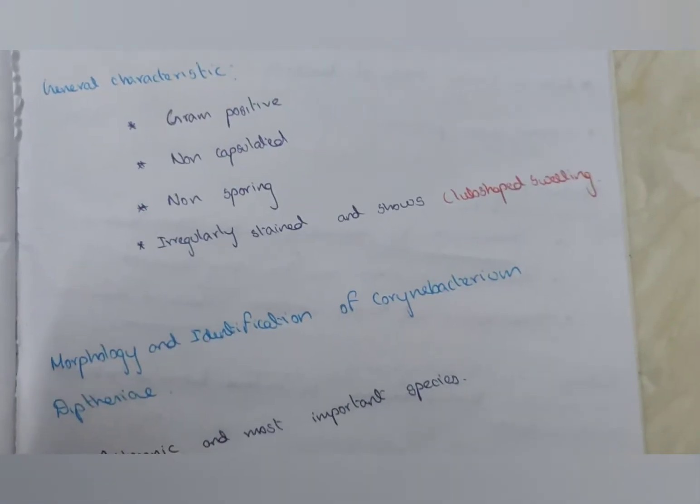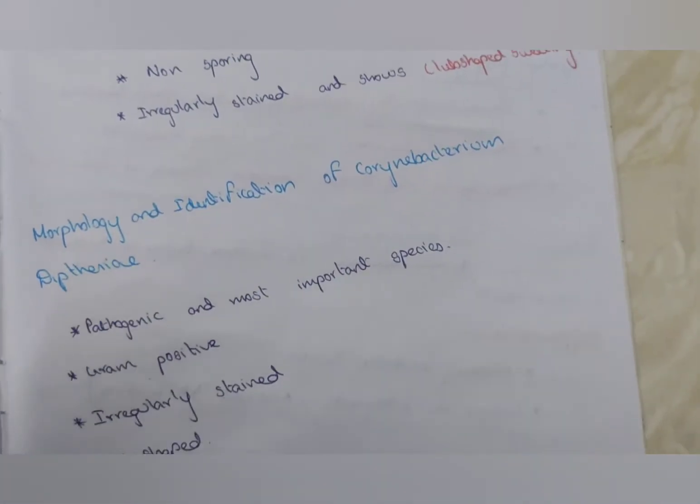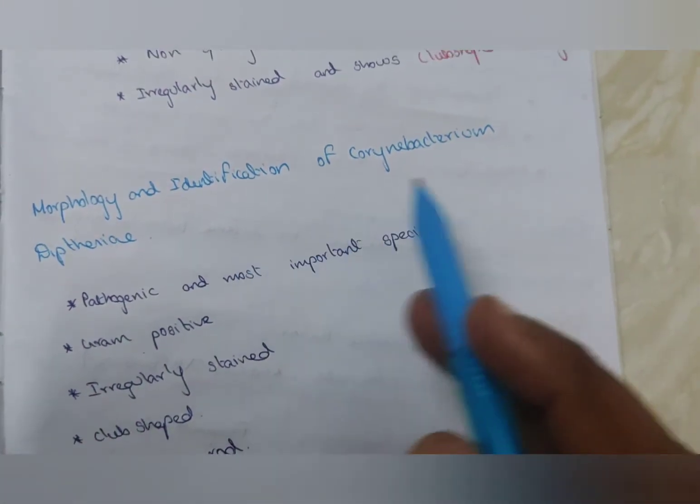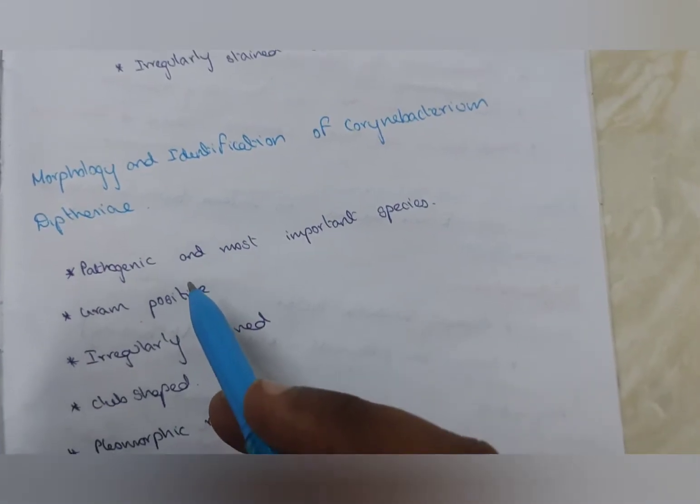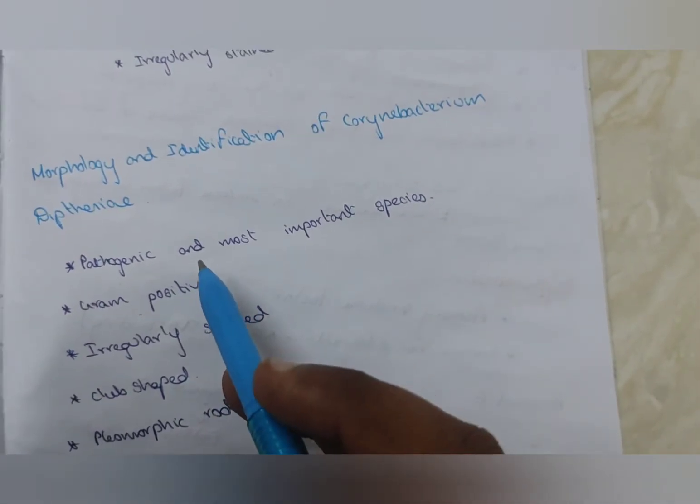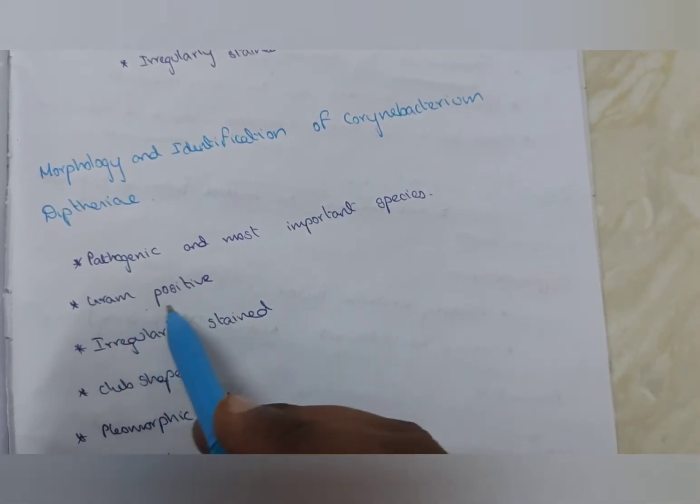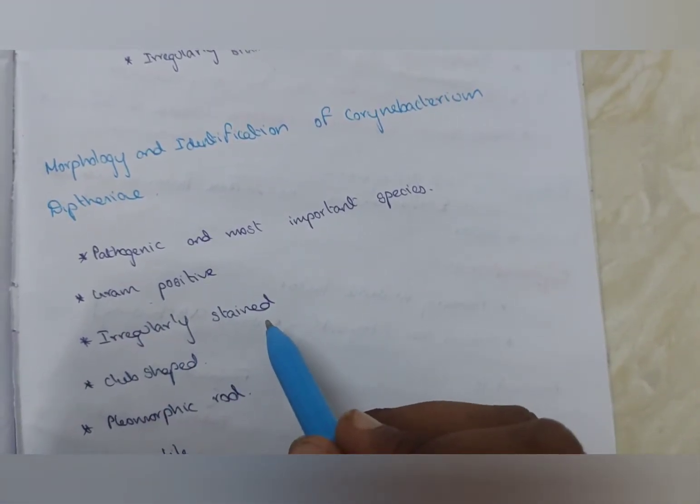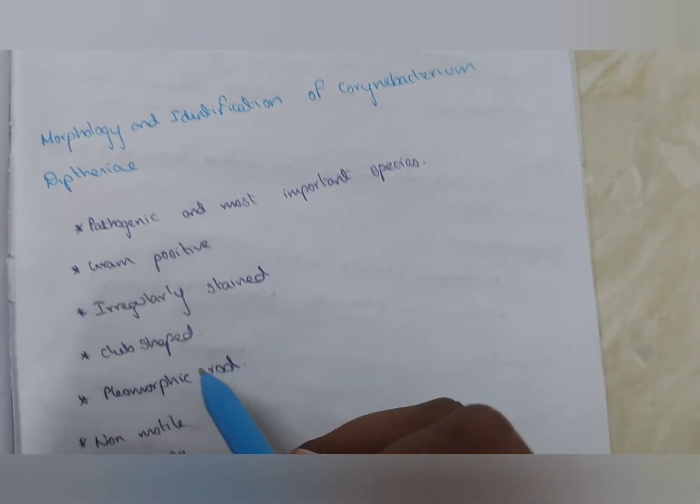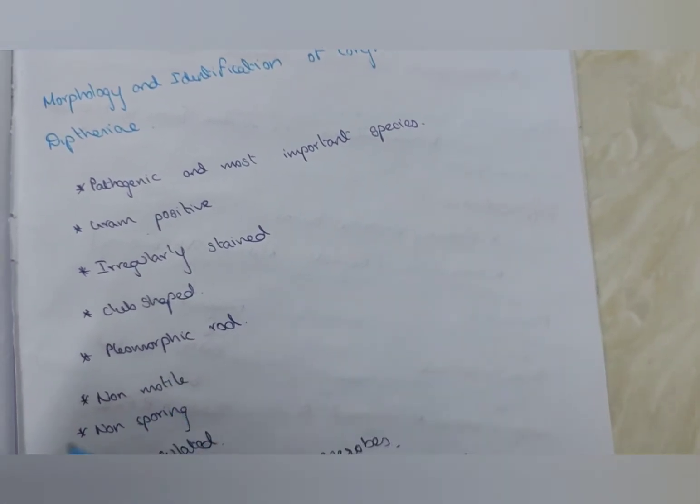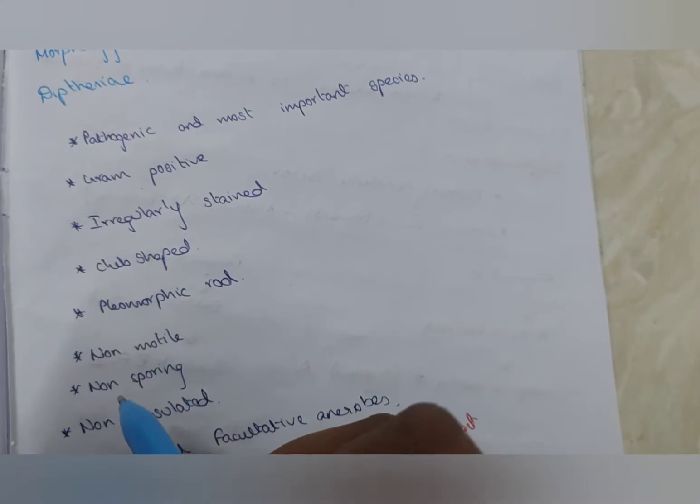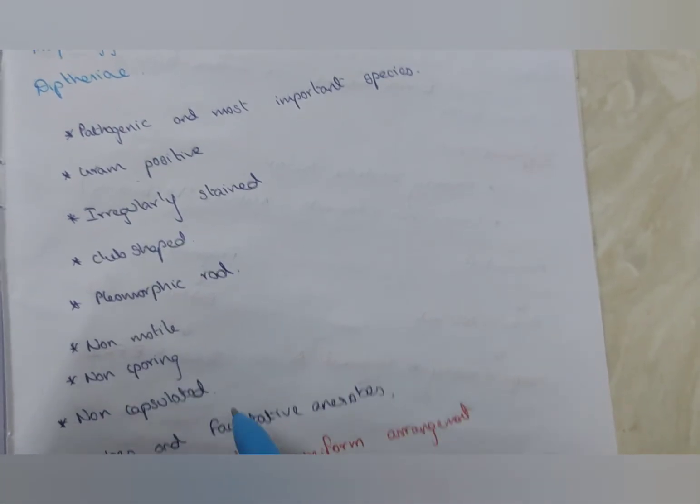Now we are going to see about Corynebacterium diphtheriae. Morphology and identification of Corynebacterium diphtheriae. It is a pathogenic and most important species. It is gram-positive, irregularly stained, club-shaped, pleomorphic rod, non-motile, non-sporing, non-capsulated.